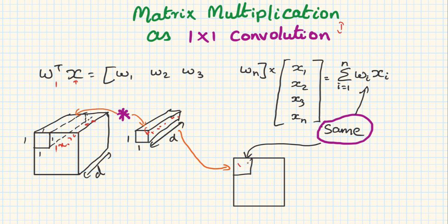This is nothing but the same as the sum of wi xi. So matrix multiplication can be easily expressed as one by one convolution and vice versa.